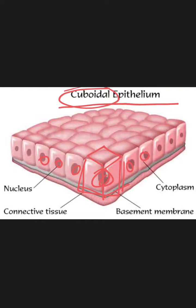Epithelial tissues act as a protective covering for the outer surface of the body and also for the inner linings of internal organs. For example, in salivary and gastric glands, epithelial tissue is specialized to secrete enzymes that help in digestion of food. Certain epithelial cells lining the small intestine also absorb nutrients from digested food, which helps in the process of digestion.